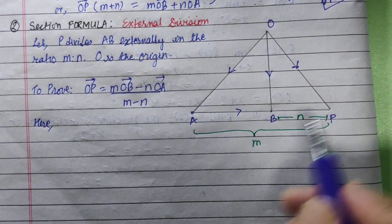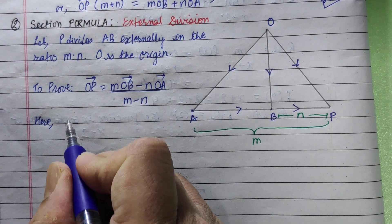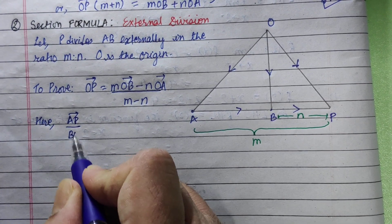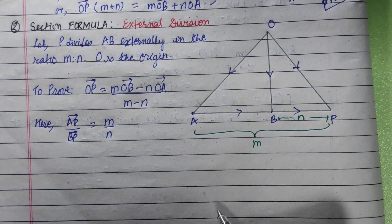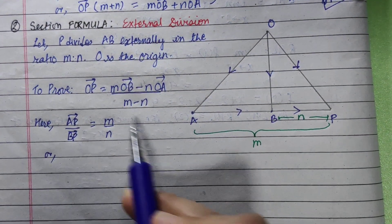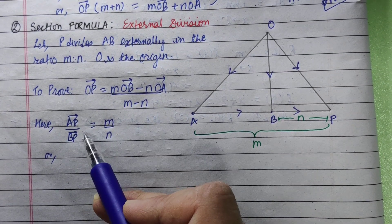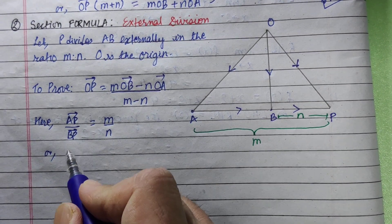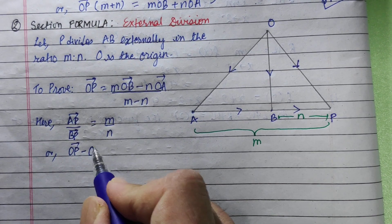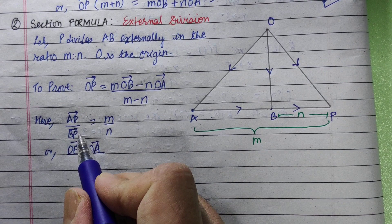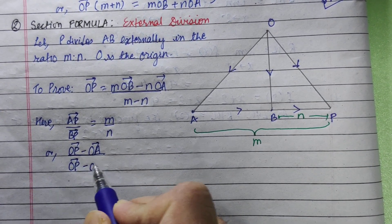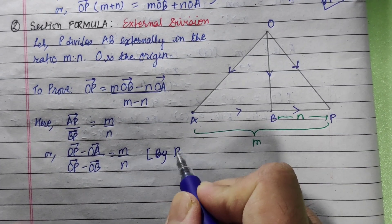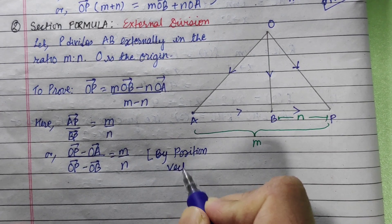To prove this, note that the ratio is in the opposite direction. We have AP vector and BP vector, and AP upon BP equals m to n. Using the position vector law: AP vector equals OP vector minus OA vector, and BP vector equals OP vector minus OB vector, and this ratio equals m upon n.